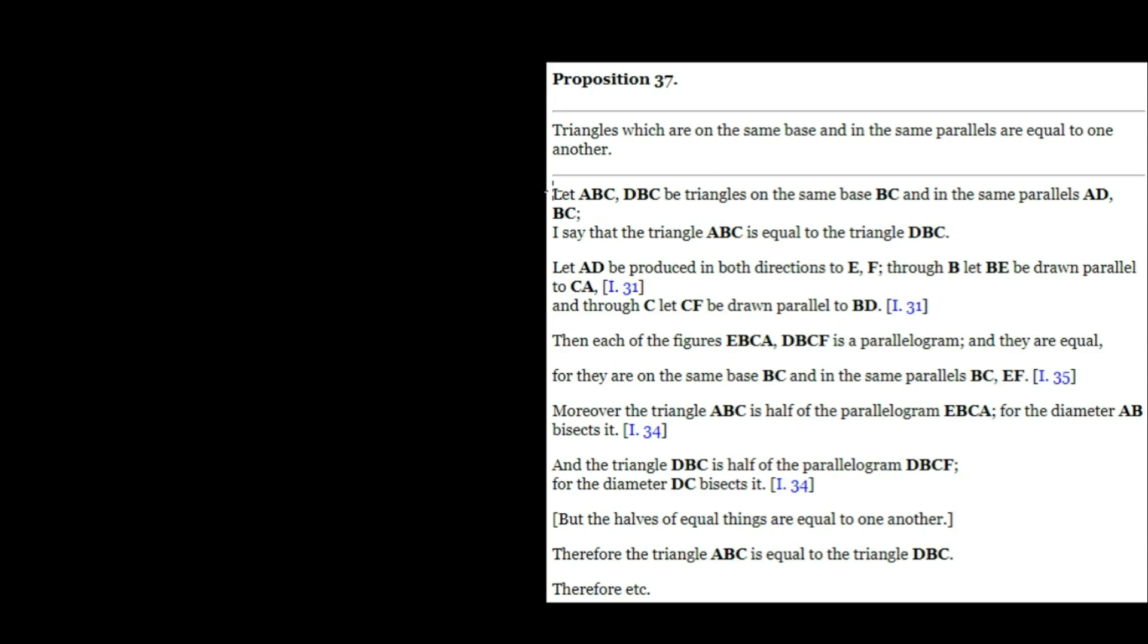Proposition 37 says that triangles which are on the same base and in the same parallels are equal to one another.